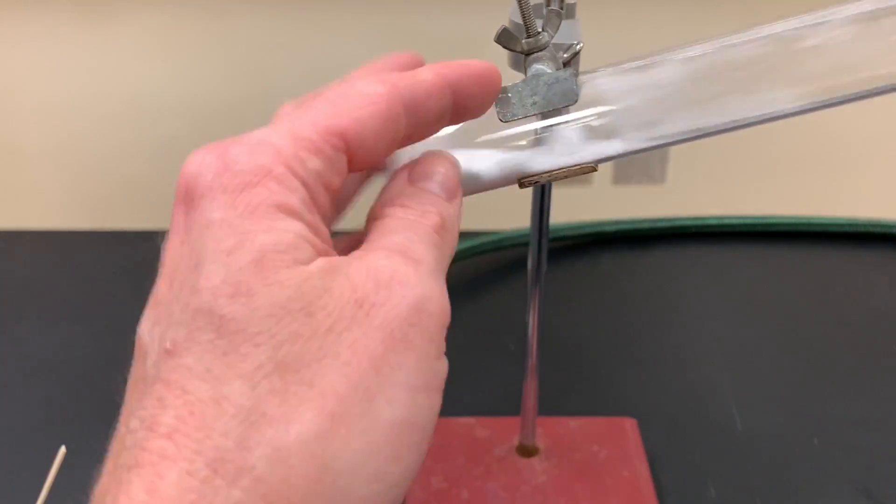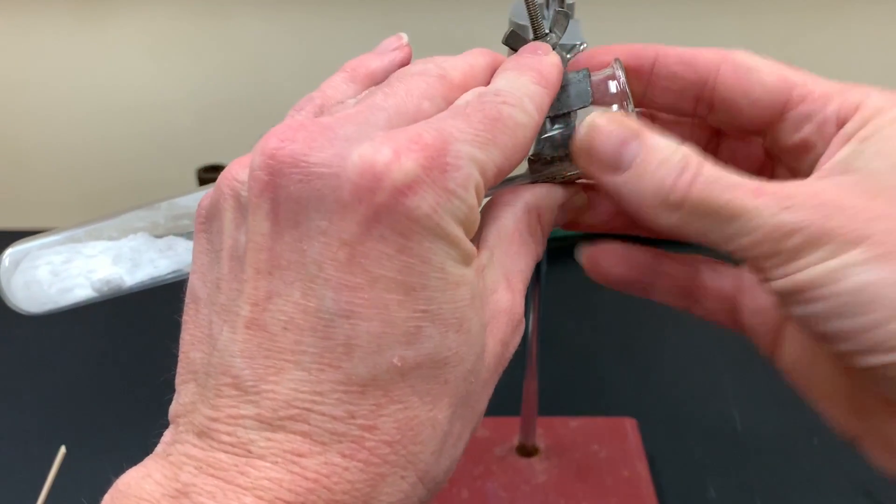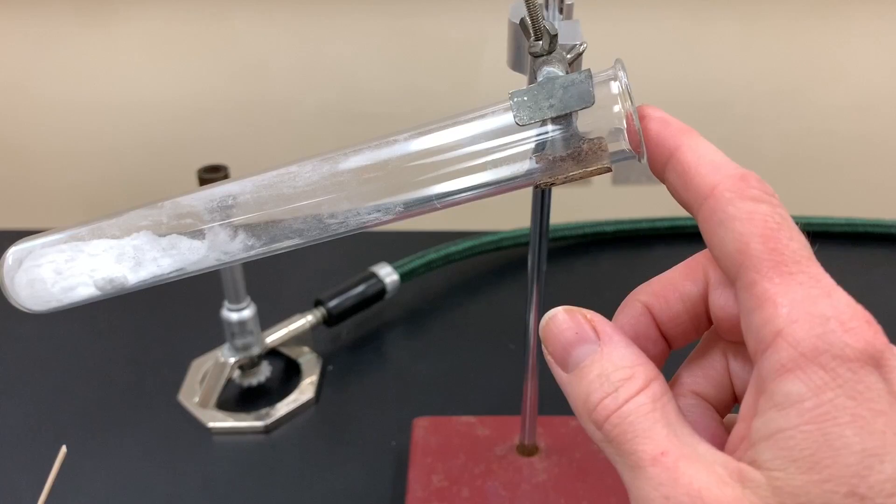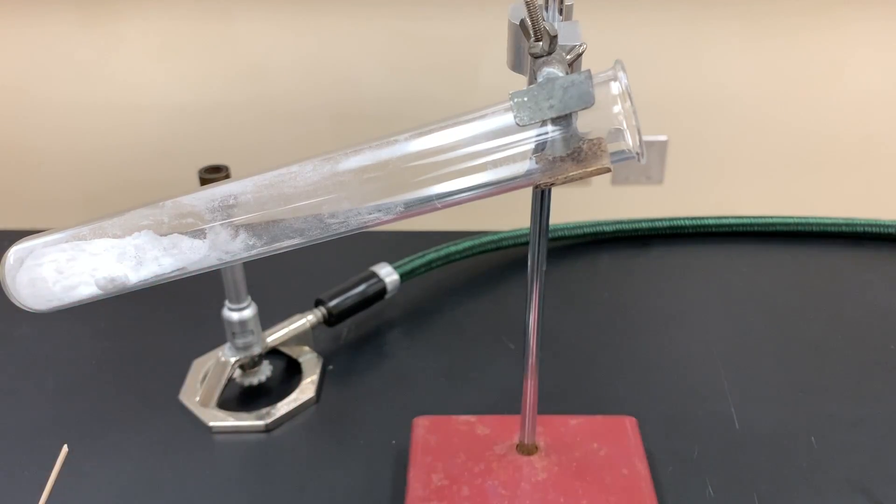You'll want to put your test tube not at a horizontal angle but fairly close like this and clamp it down securely, having this end facing away from others. You're going to put the Bunsen burner under this end and heat it and start the decomposition of sodium bicarbonate.